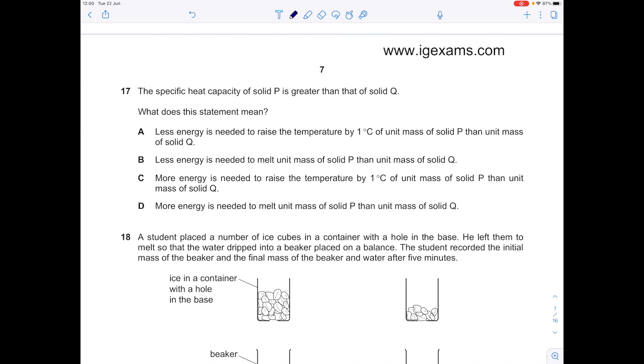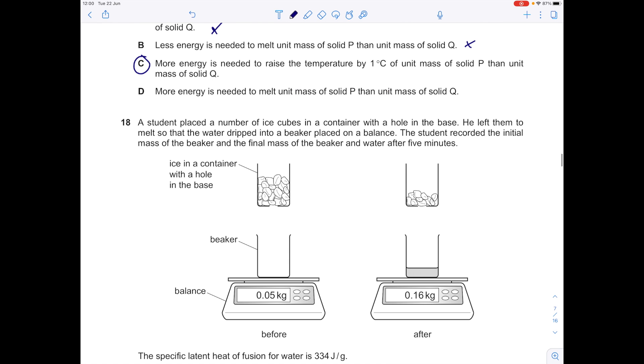The specific heat capacity of solid P is greater than that of solid Q. Remember that's the energy required to heat one kilogram of a substance by one degree Celsius. What does this statement mean? Less energy is needed to raise temperature by one degree Celsius of unit mass of solid P than unit mass of solid Q. No, that's the opposite of what I just said. Less energy is needed to melt. No, that's not what this is about. More energy is needed to raise temperature of one degree Celsius of unit mass of solid P than unit mass of solid Q. Yes, that's true.